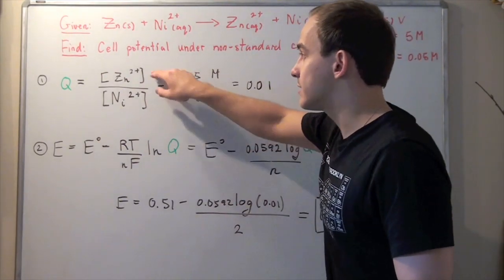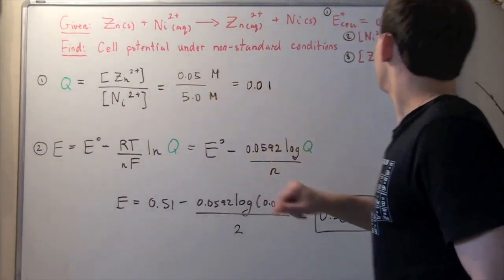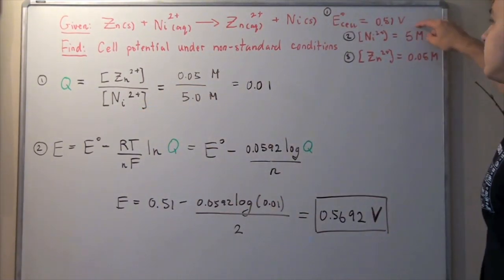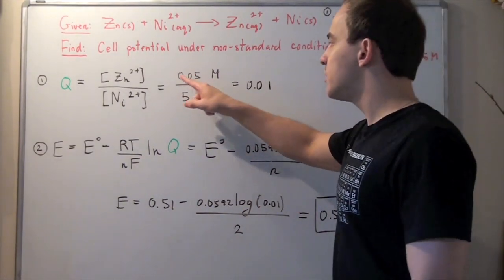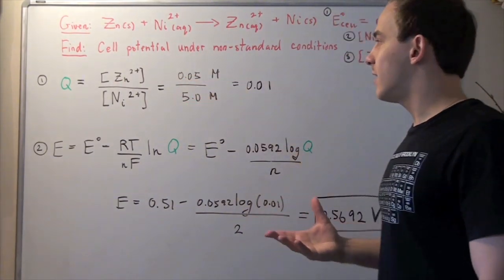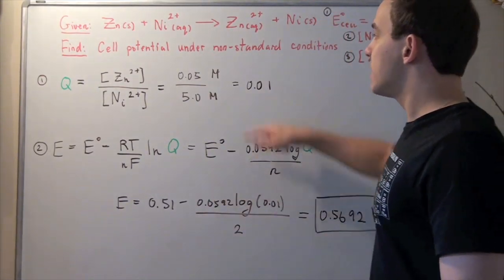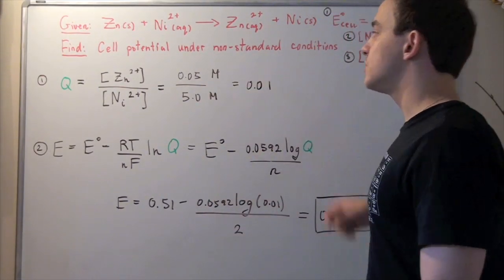We're given zinc as 0.05 molar and nickel as 5 molar. So we divide 0.05 divided by 5, which gives us 1 over 100, which is 0.01. The molar units cancel, so Q is unitless.